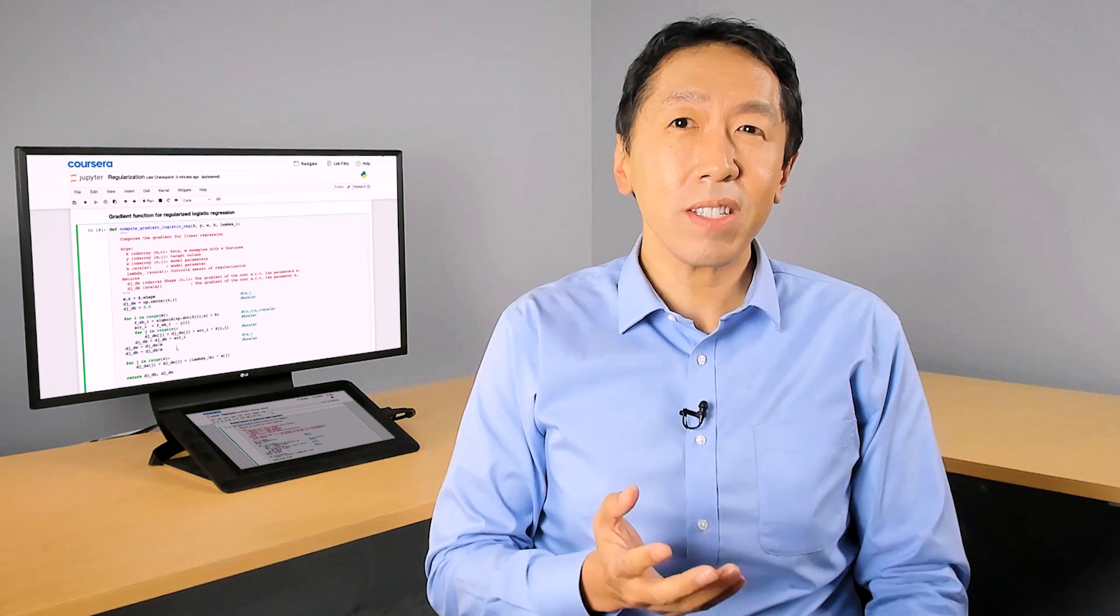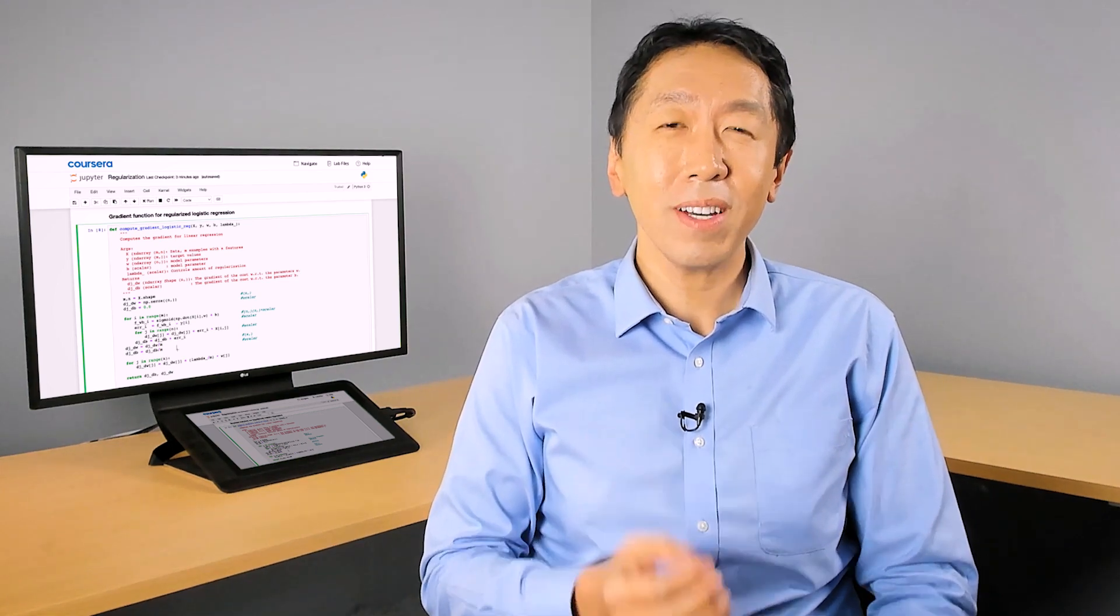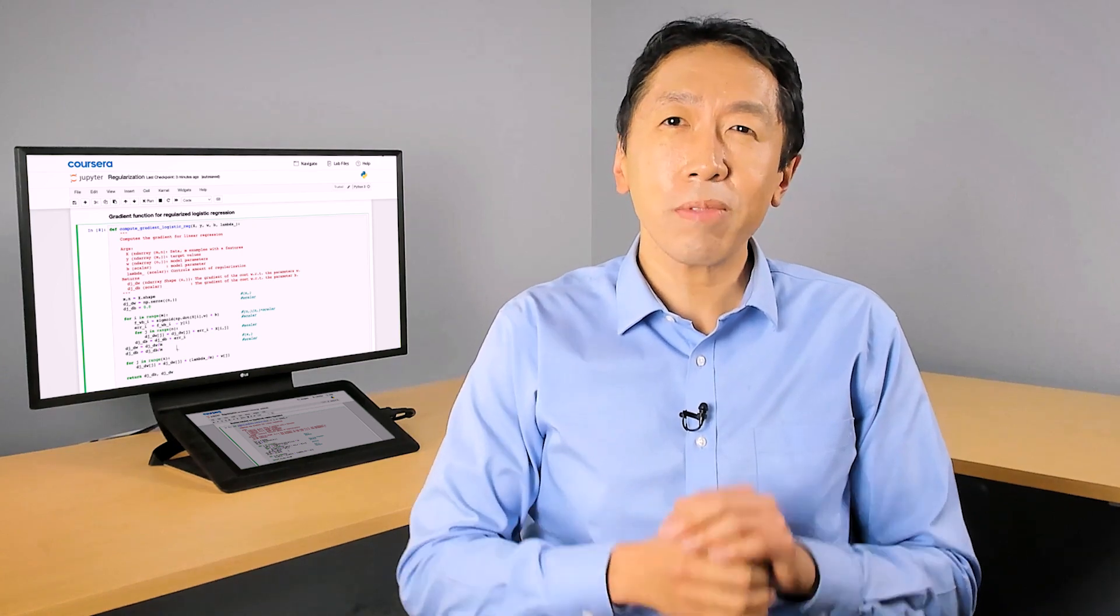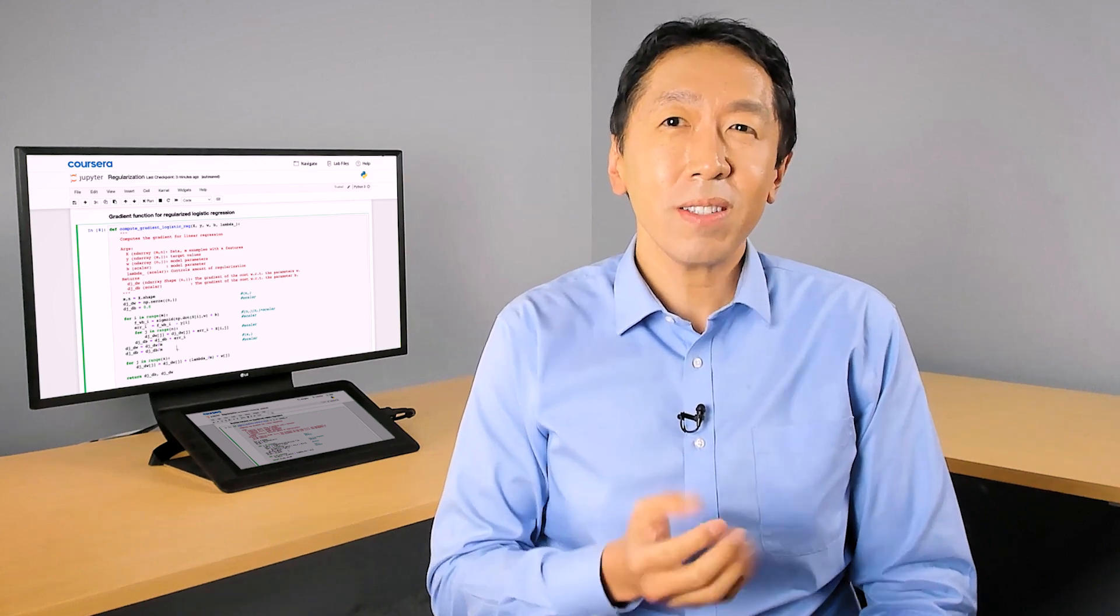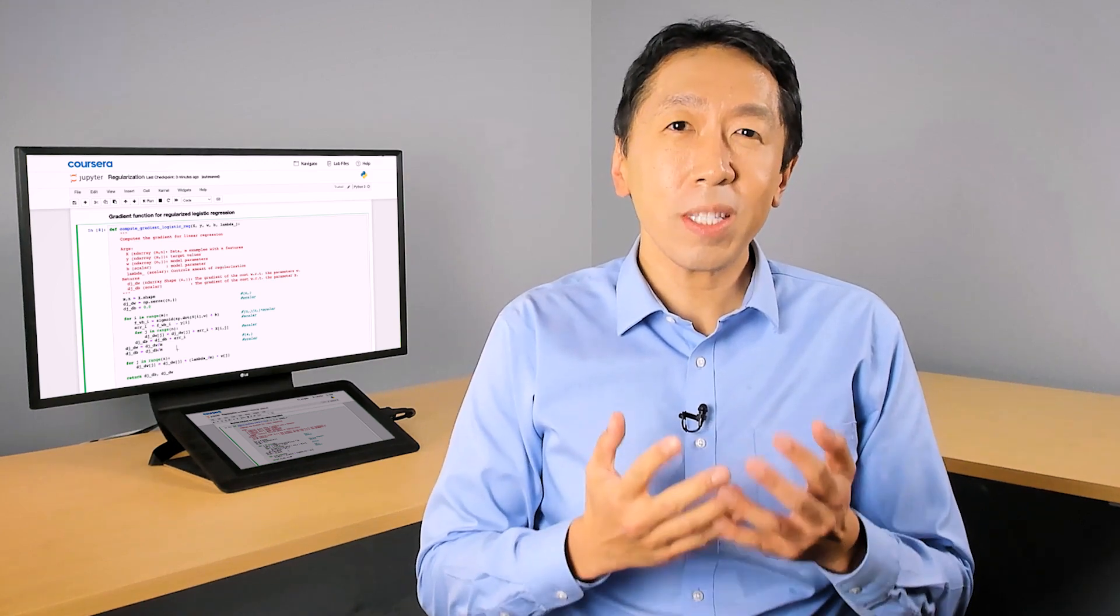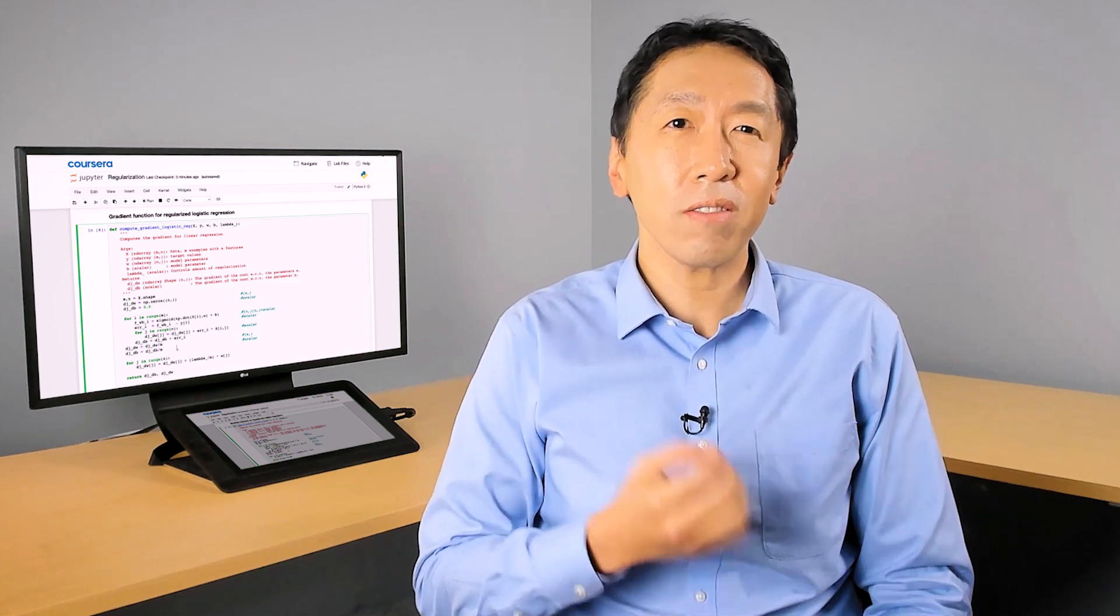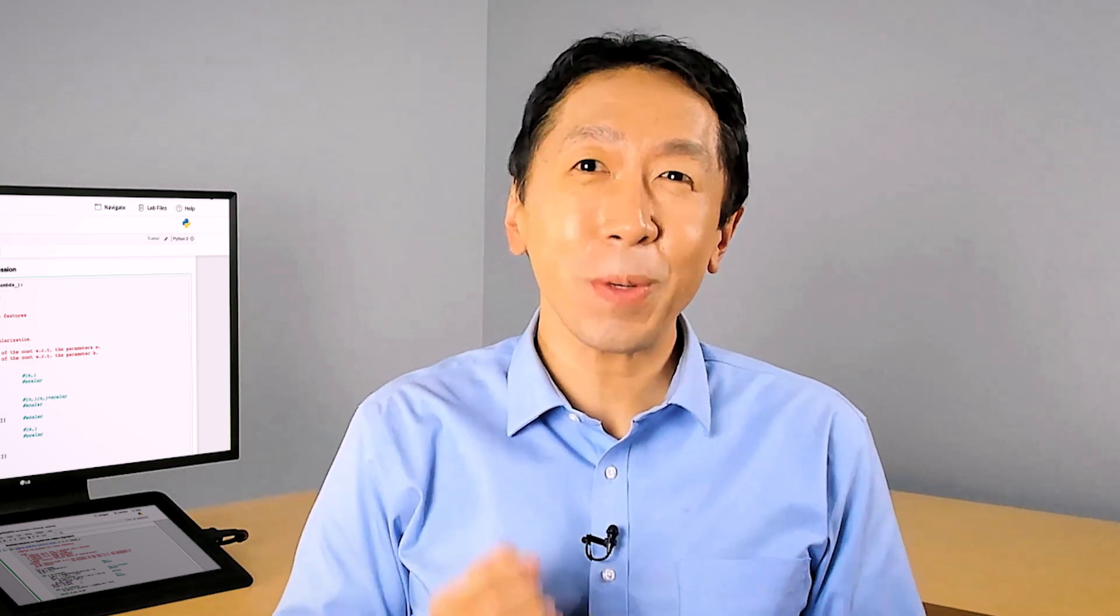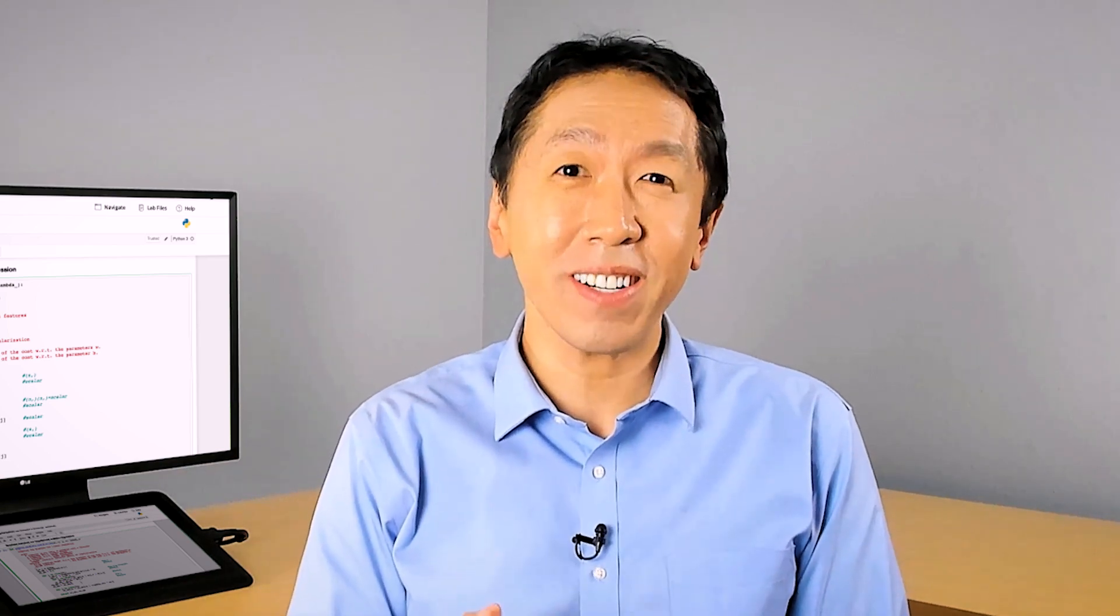In the second course of this specialization, you'll learn about neural networks, also called deep learning algorithms. Neural networks are responsible for many of the latest breakthroughs in AI today, from practical speech recognition to computers accurately recognizing objects and images to self-driving cars. The way a neural network gets built actually uses a lot of what you've already learned, like cost functions, gradient descent, and sigmoid functions. So again, congratulations on reaching the end of this third and final week of course one. I hope you have fun with the labs, and I will see you in next week's material on neural networks.